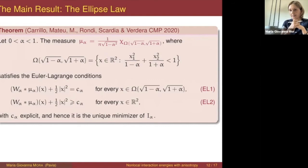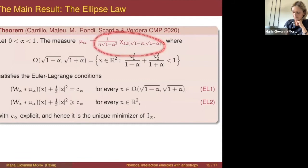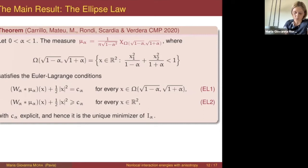In the remaining time, I would like to give just an idea of the proof of this theorem. What we need to do is show that this measure satisfies the two Euler-Lagrange conditions. The first condition — equality inside the ellipse — requires the explicit expression of the potential function. The second condition is an inequality, so bounds and estimates on the potential function may be enough.